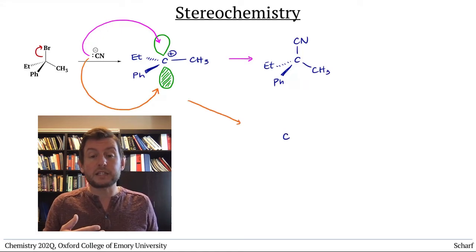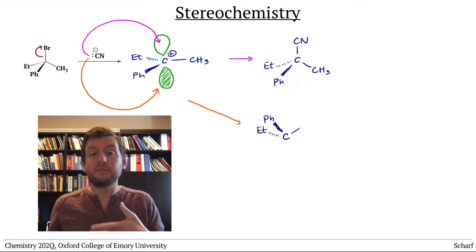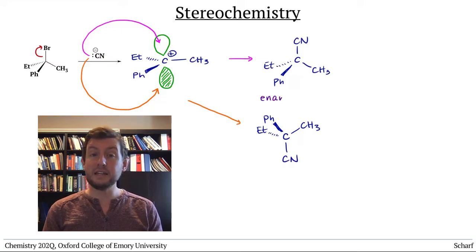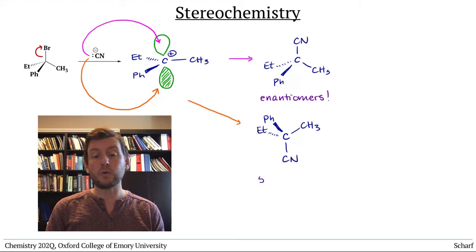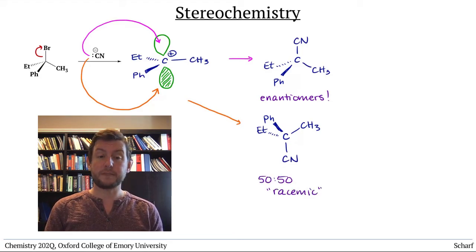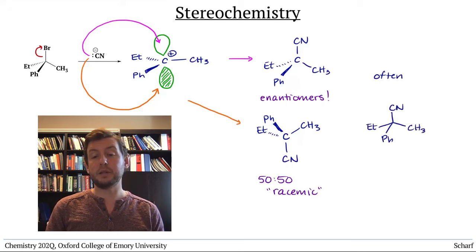Half the time it reacts from one face, half the time from the other. The result is that we make a pair of enantiomers in equal quantities. This is called a racemic mixture. It's usually represented by drawing one product and the plus minus sign below it.